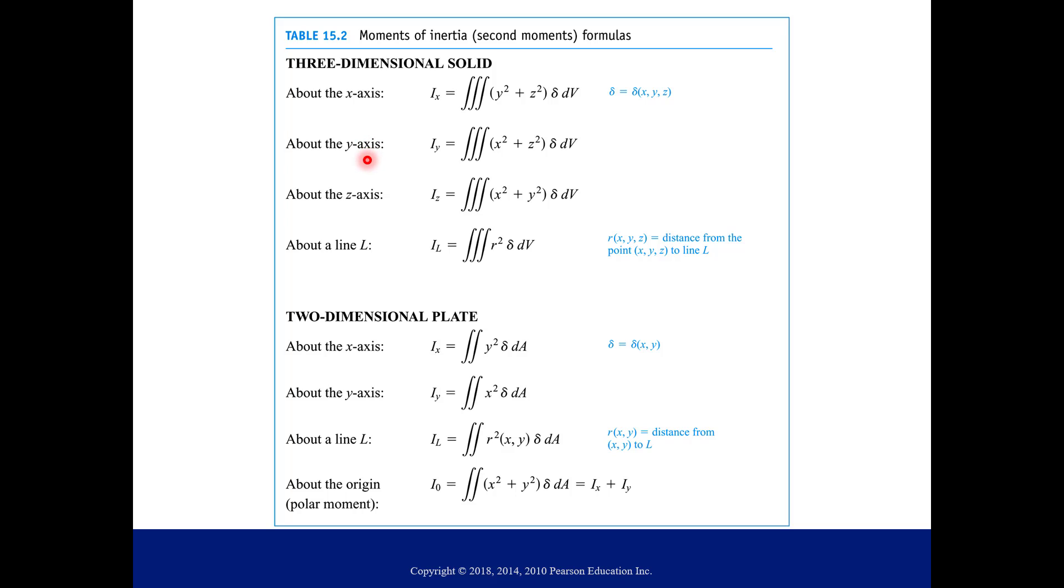And then very similar setup for your other second moments about your Y axis, Z axis, and then about just a line L. So if you just have a different line, it doesn't happen to be your X, Y, or Z axis, then like we said before, that distance to your line is represented by R.